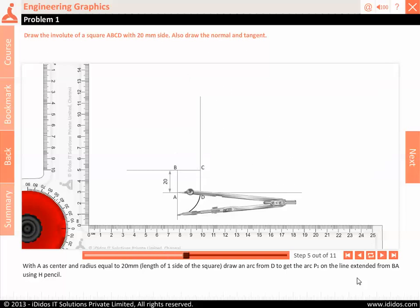With A as center and radius equal to 20 mm, length of one side of the square, draw an arc from P1 to get the arc P2 on the line extended from BA using H pencil.